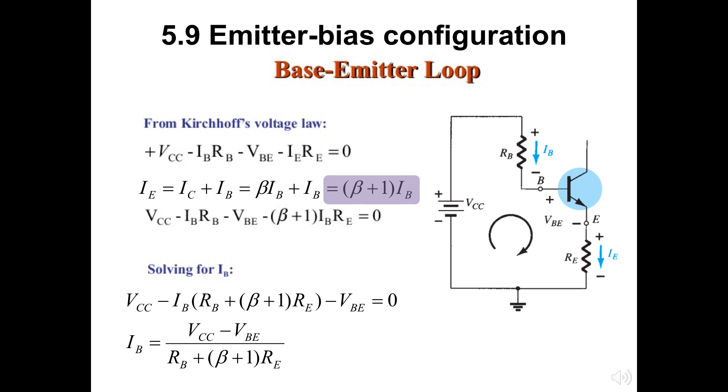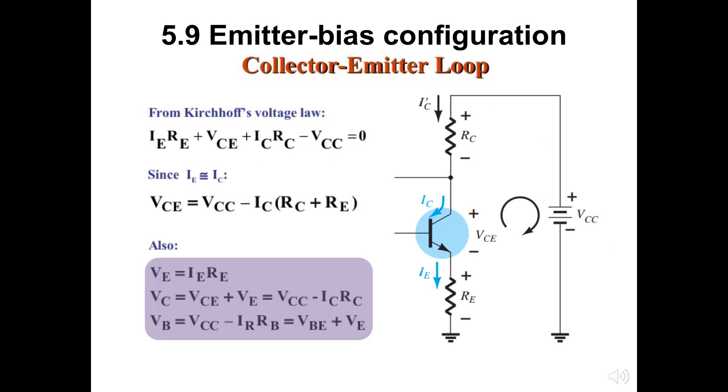Here the IB can be calculated as we simplified the above base emitter loop using the KVL. For the collector emitter loop, by applying the KVL we can also have the four elements of the voltages here. Collector and emitter current are considered this time, so make sure the current direction correct.